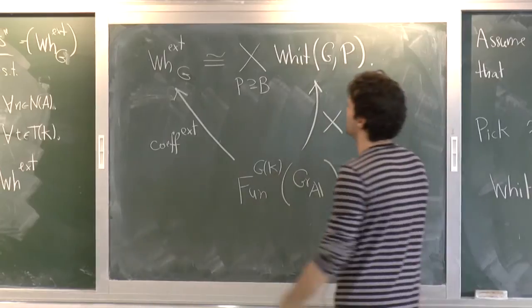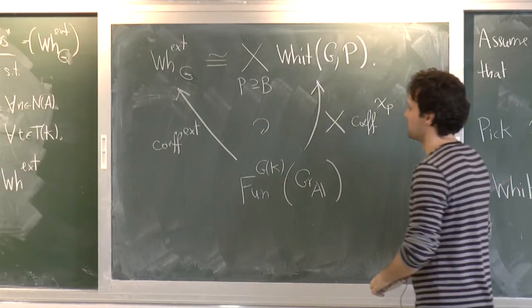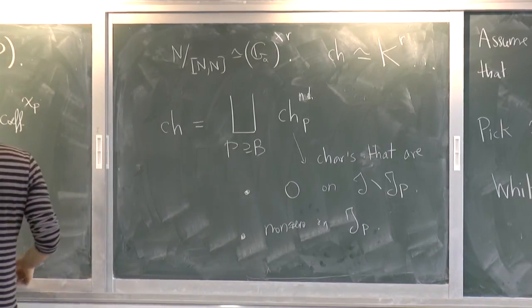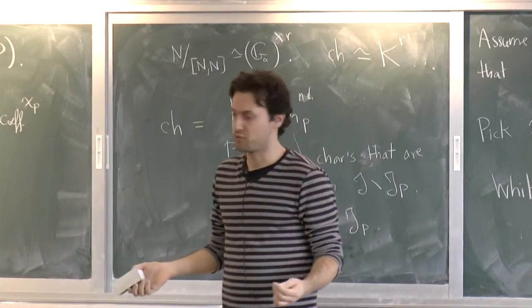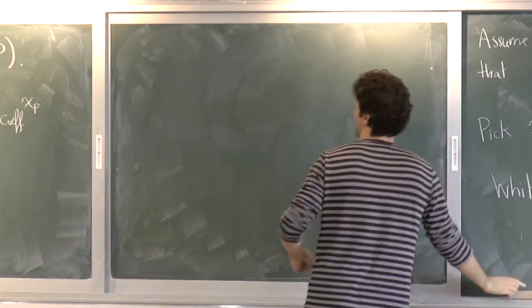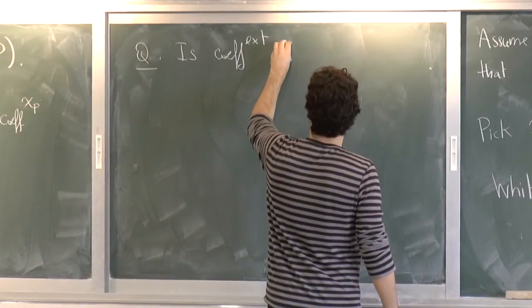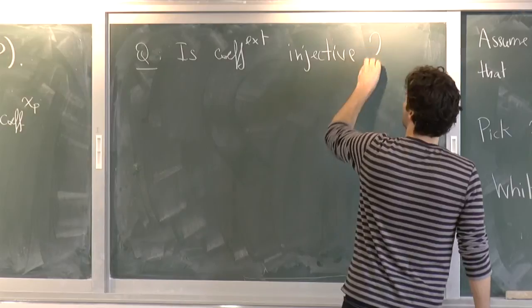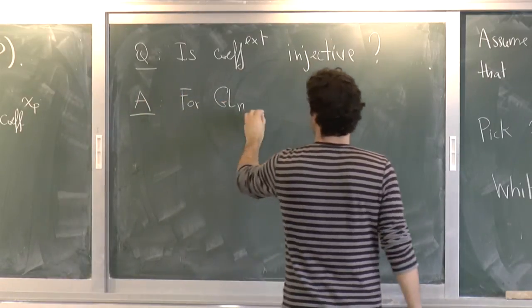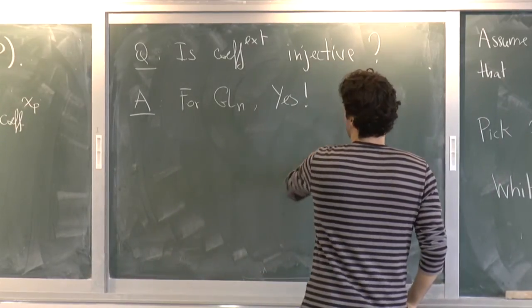And comment on the fact that here this definition that I wrote when I was doing GL2 actually works for any group. Makes perfect sense for any group. And I want the assumption to be center of G connected. And I will have that Whittaker extended now for G. So maybe I can put G here. That was GL2, but any G would work. Splits as the product of those spaces for any standard parabolic.